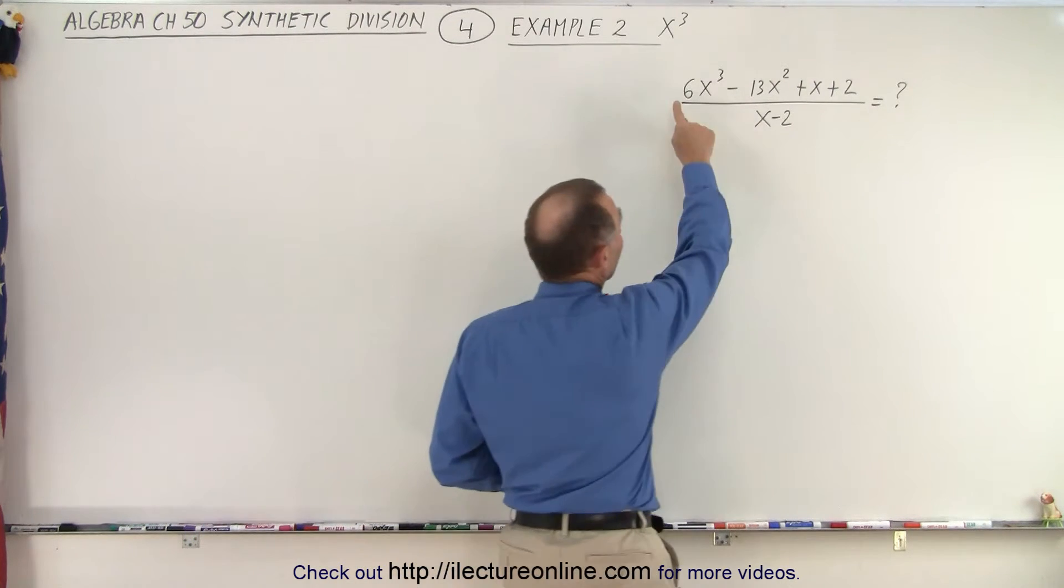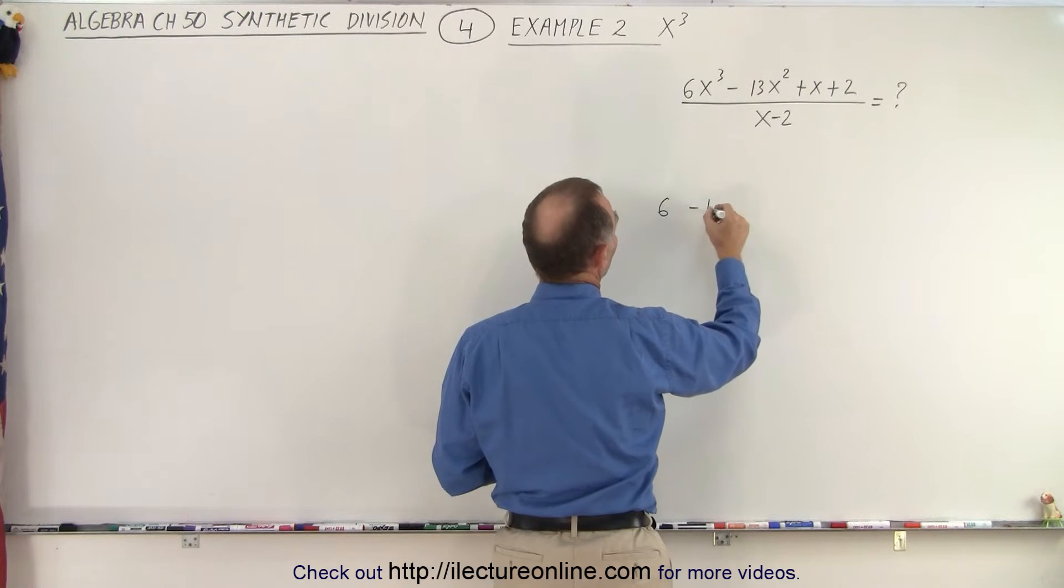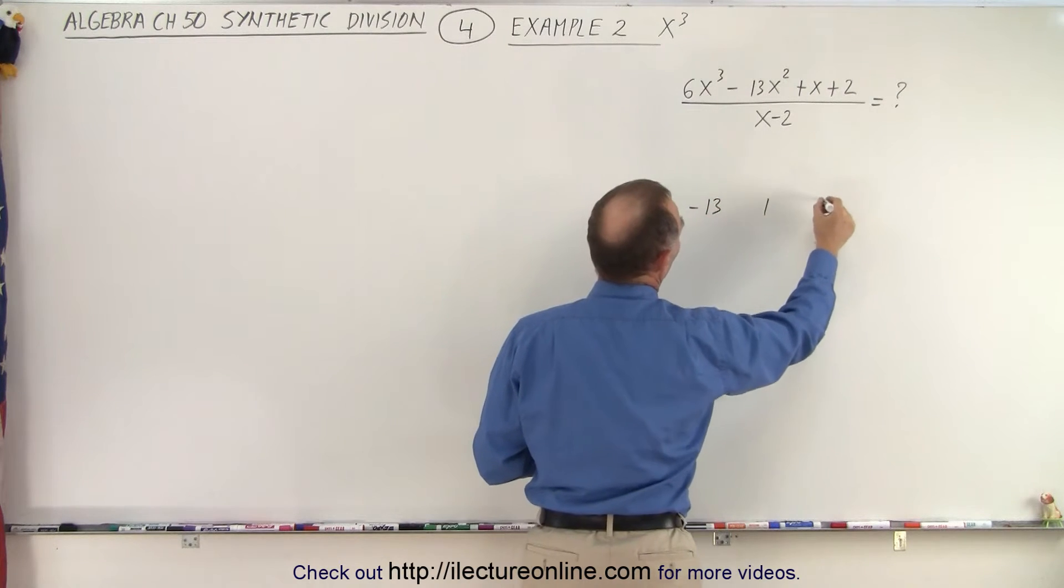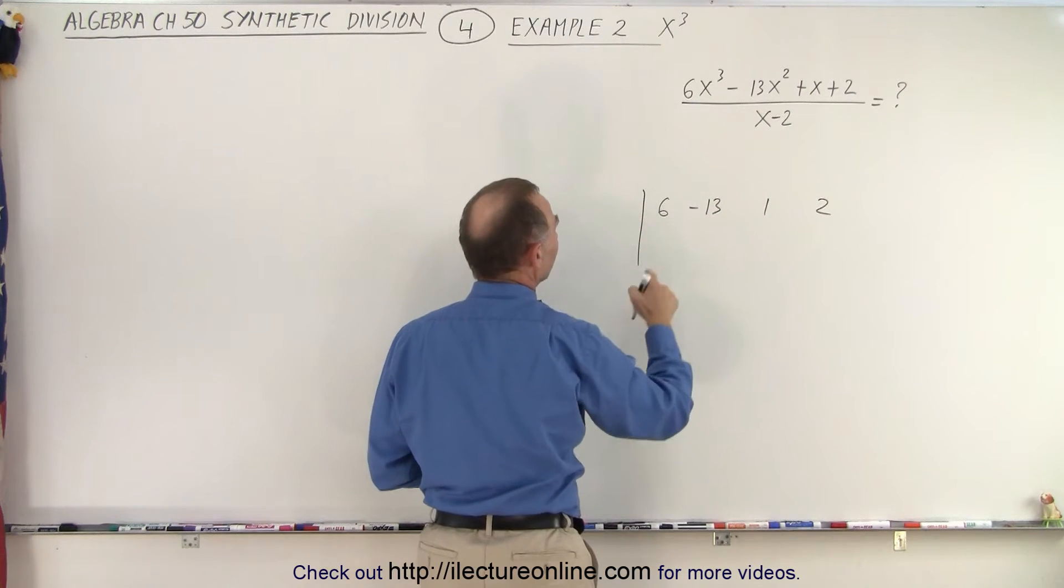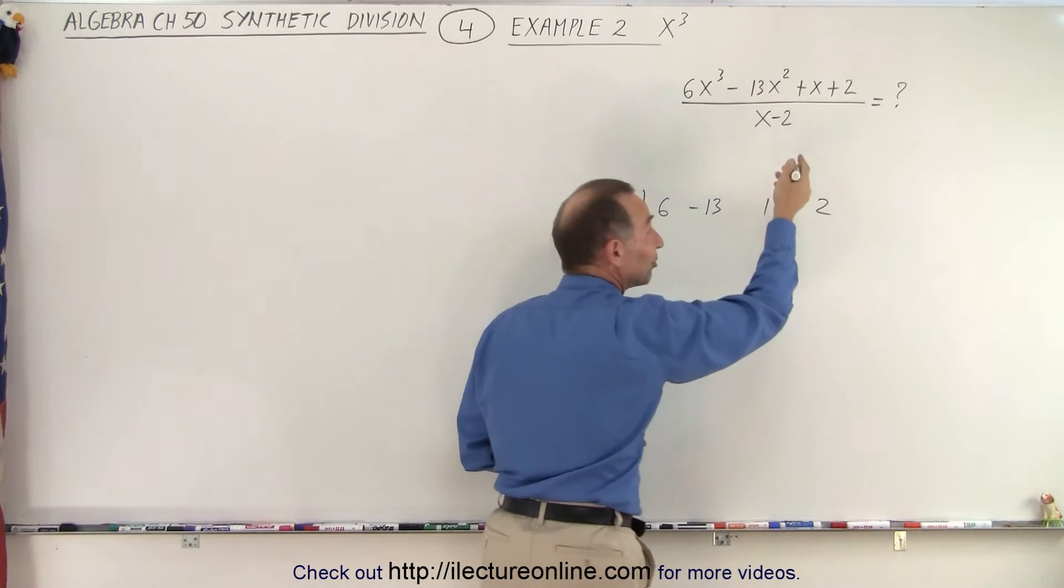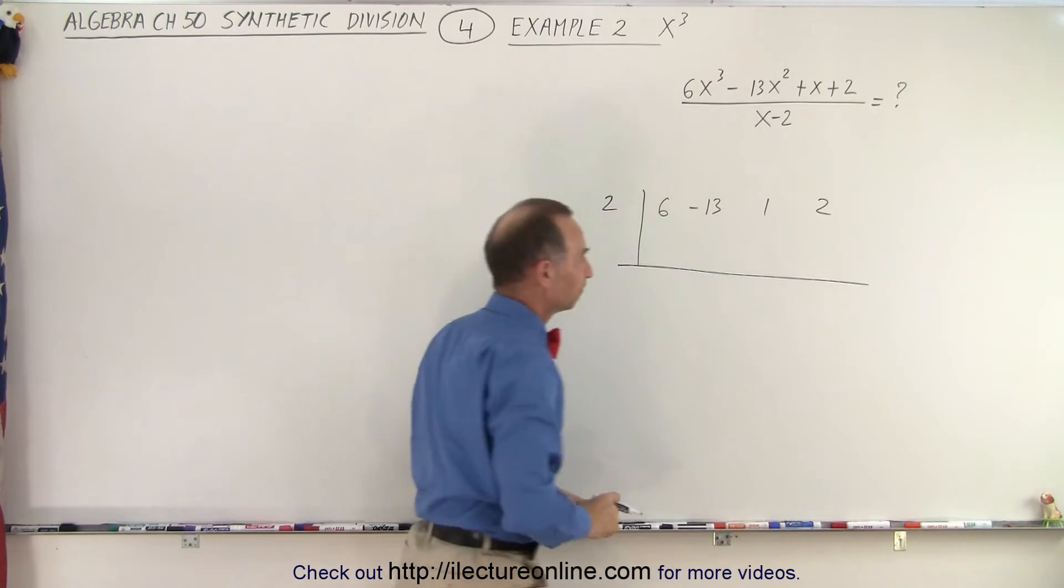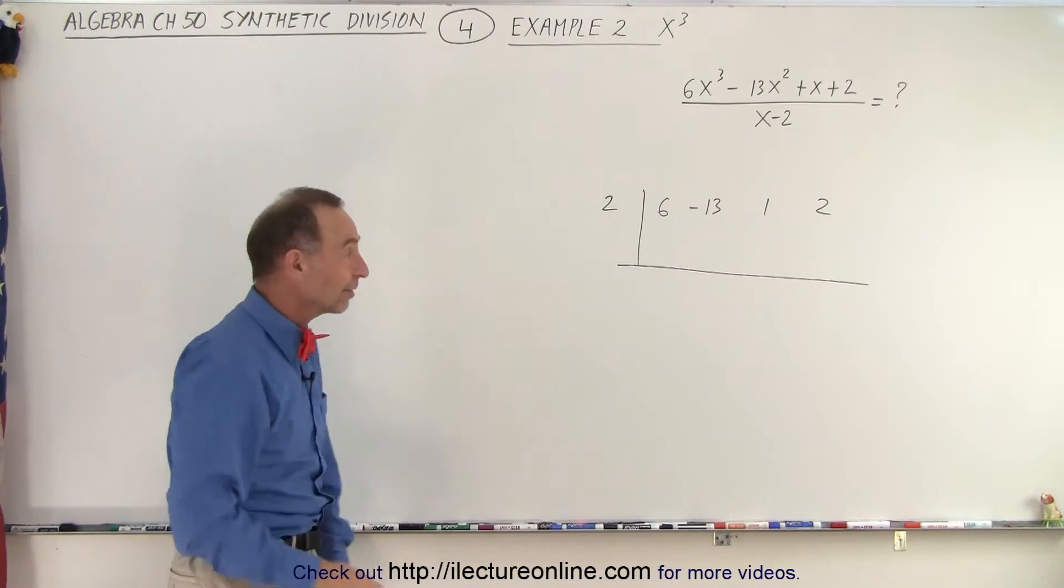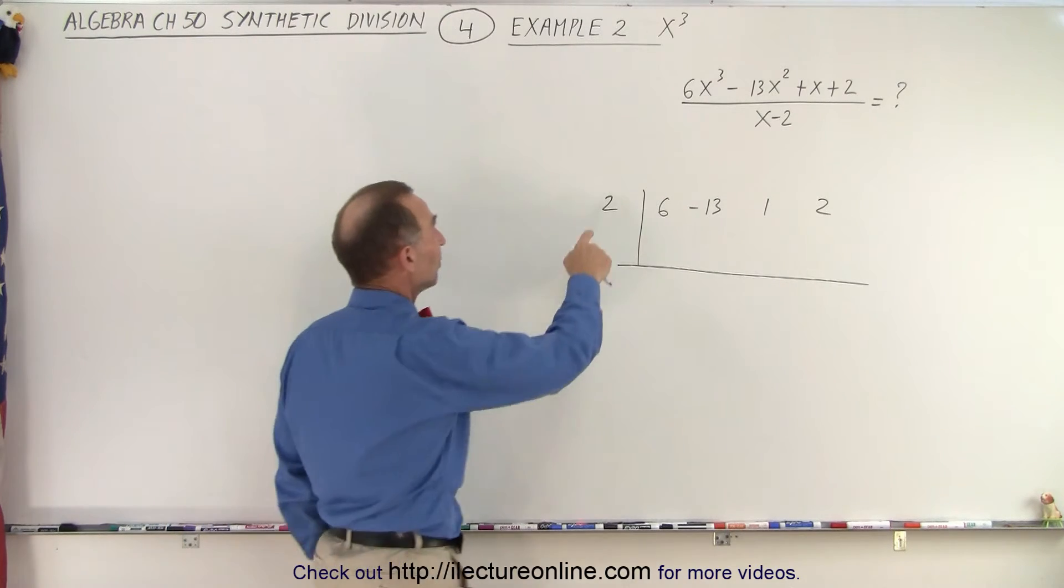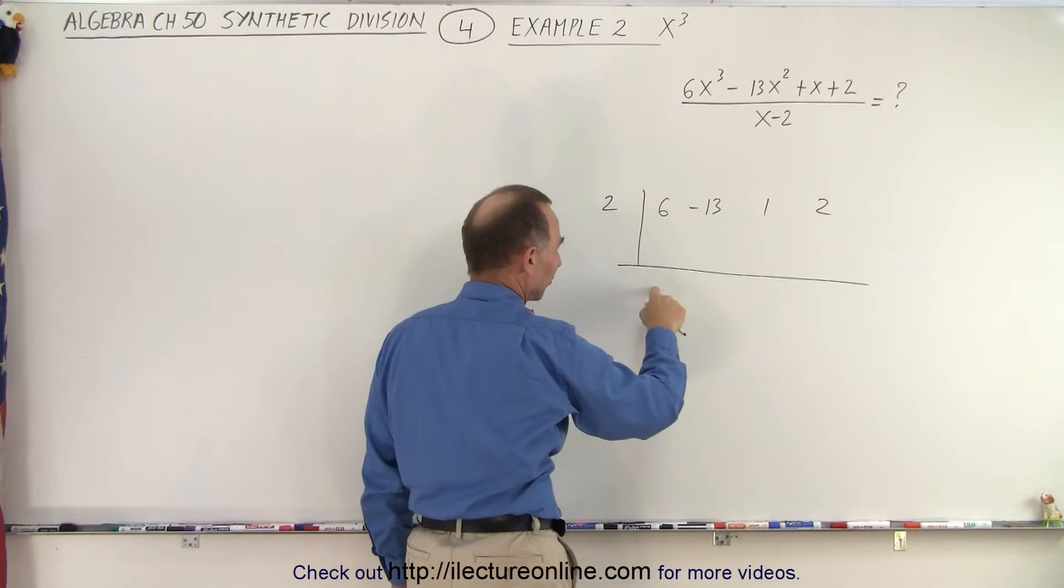We do the same thing as before. We write down all the numerical coefficients. So we write 6, -13, 1, and 2. Put a line here. Over here we write the -2 but we change the sign to a positive 2. So we write a positive 2 here and then we put a line right there. Remember this is an easier method so we can add all numbers. We simply change the sign of that -2 to positive 2. We drop the first number.